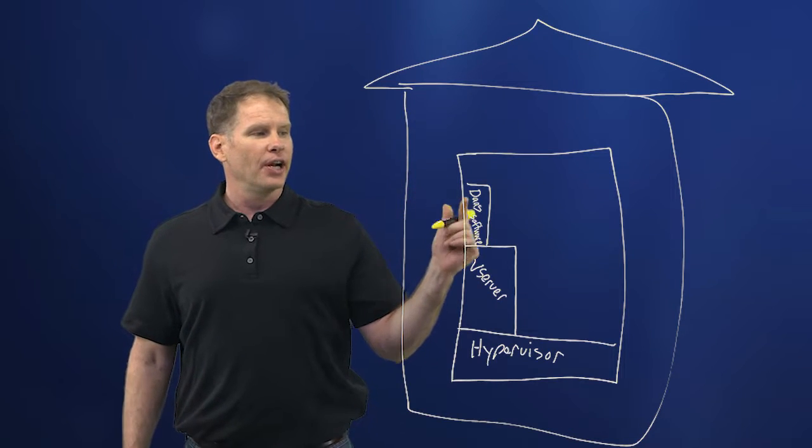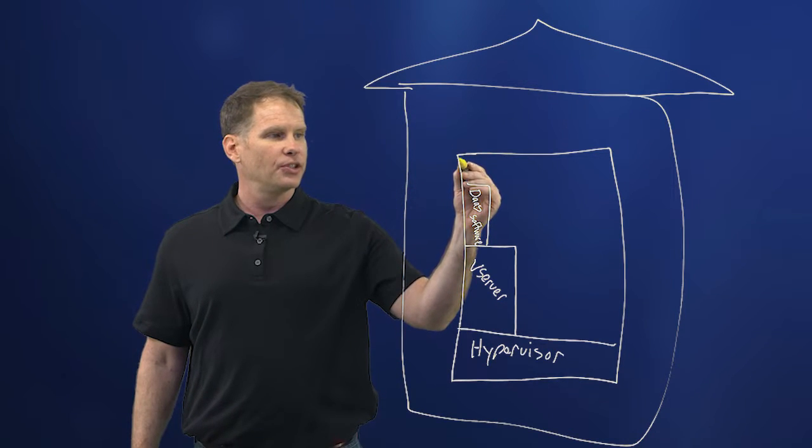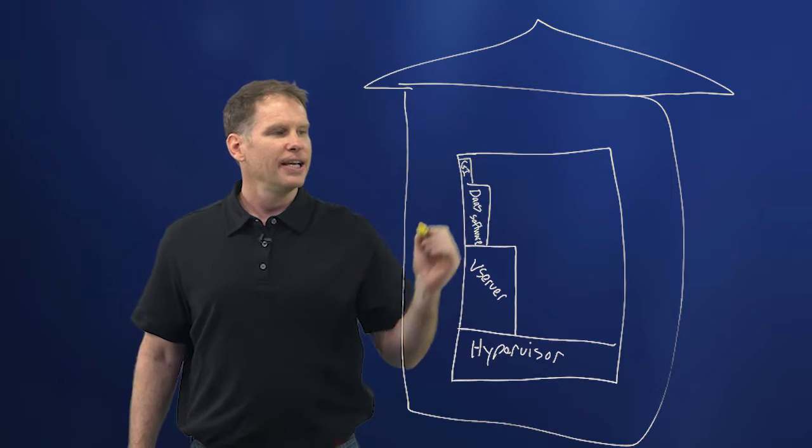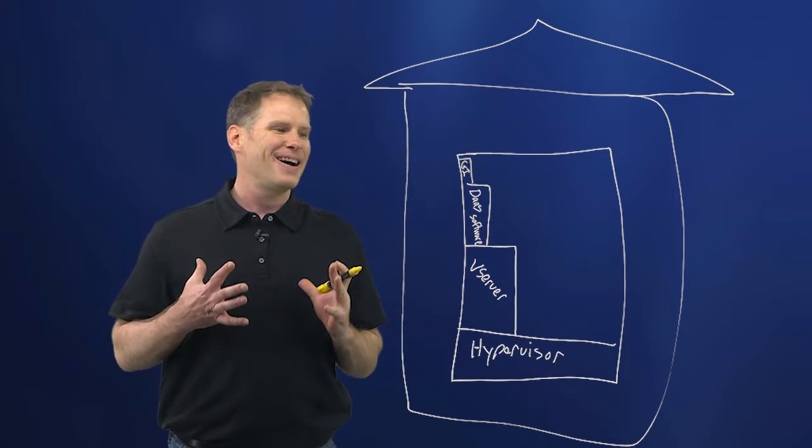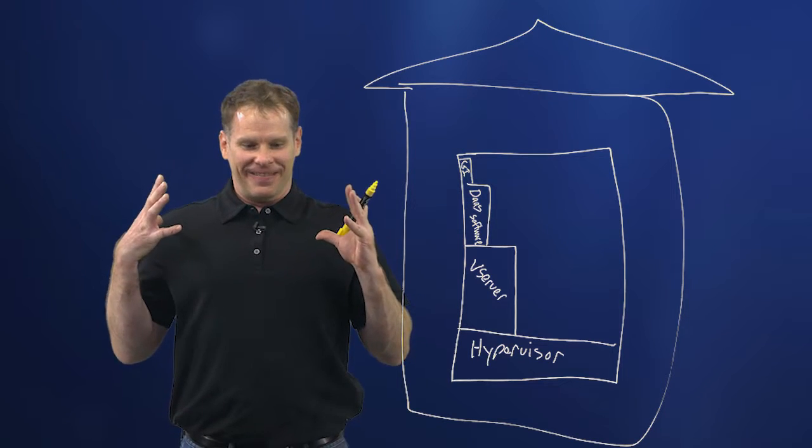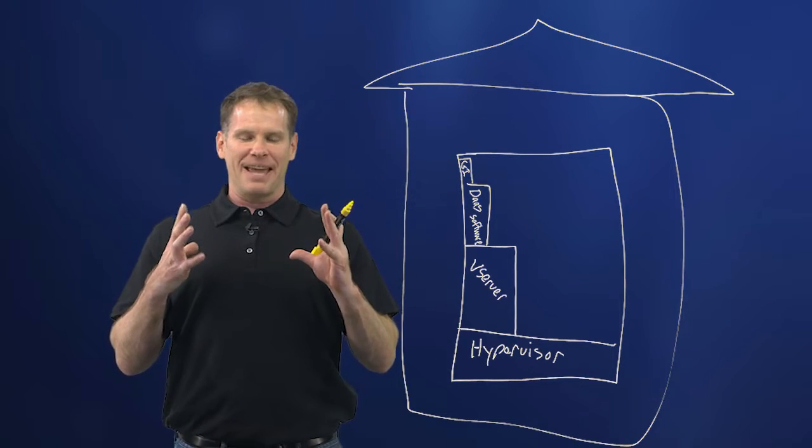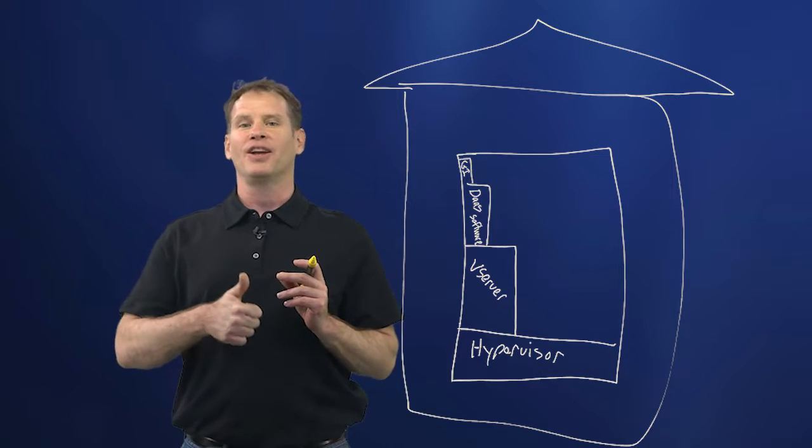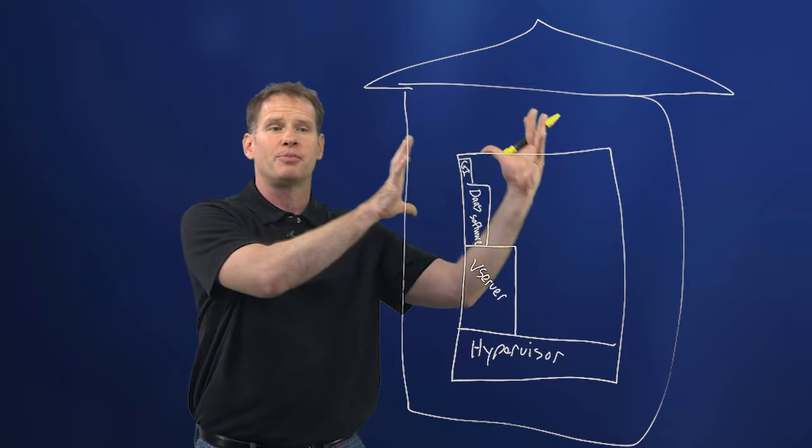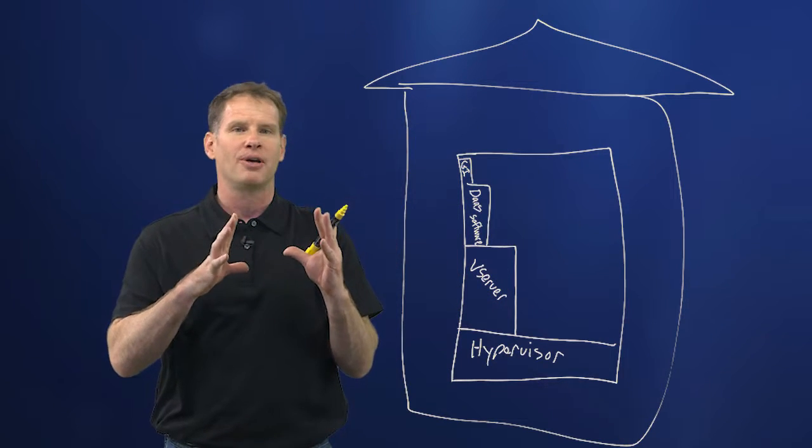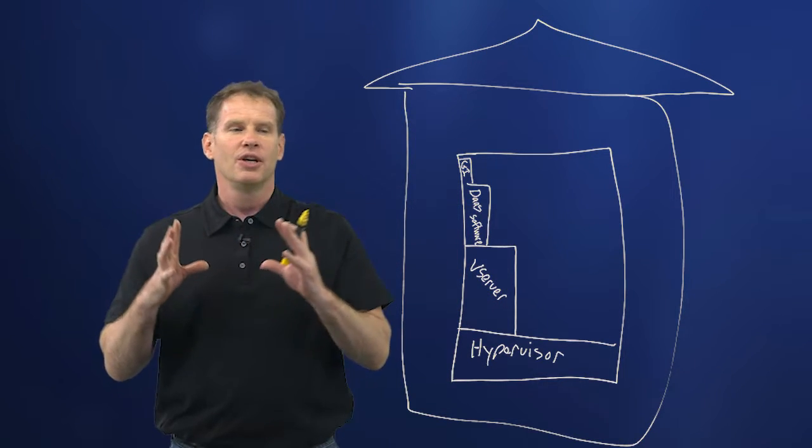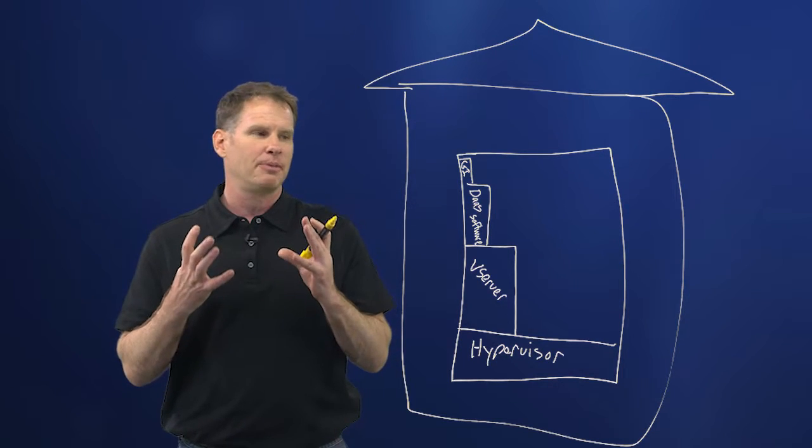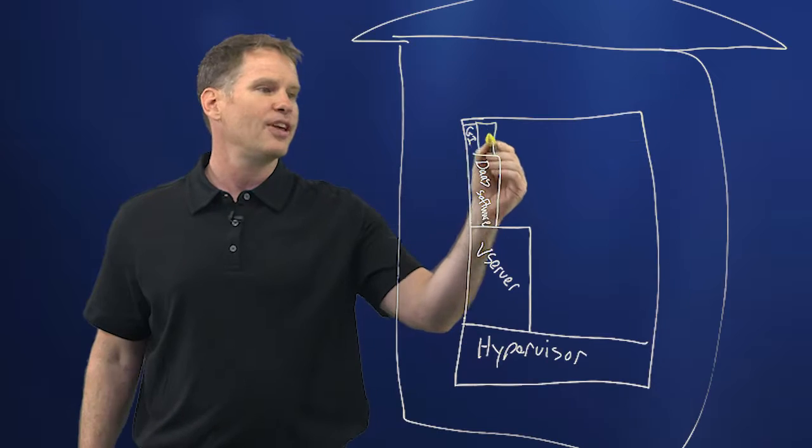Within this DAS software, we're going to create what's called a golden image. And this is basically like a machine that you would have with all of your applications on it and all of the software on it. If we want to make a hundred of these machines, they're all going to come from the golden image. So it's a virtual machine that holds everything that's going to be put on the other virtual machines.